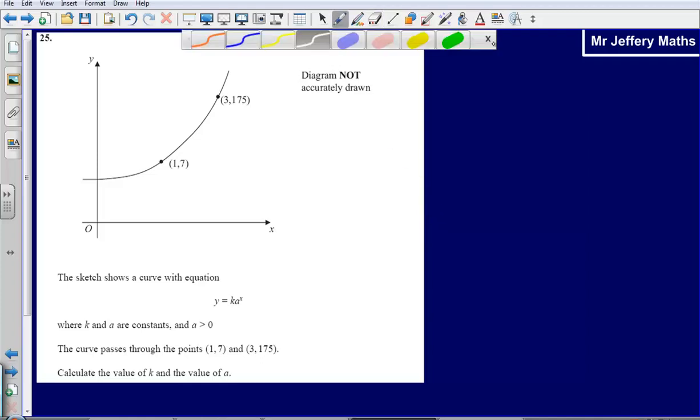This is question 25 from the 2008 calculator paper. Here we're told the sketch shows a curve with equation y equals ka to the power of x, where k and a are constants and a is greater than zero. The curve passes through the points (1, 7) and (3, 175). Calculate the value of k and the value of a.